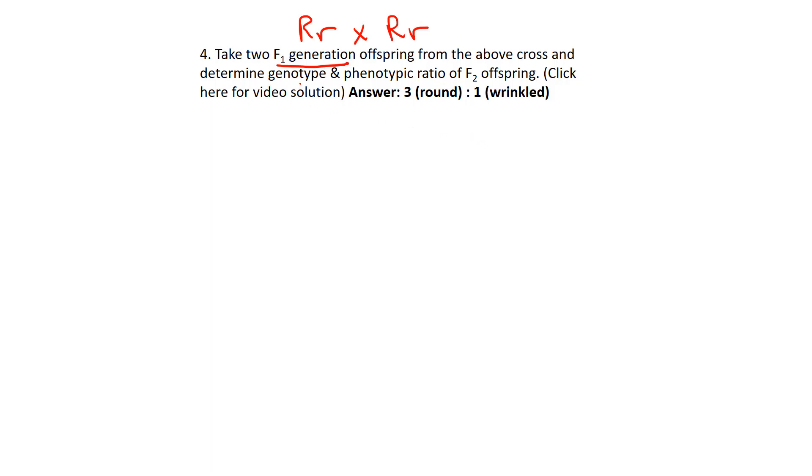And of course they want a genotype and a phenotypic ratio of the F2 generation. So we're taking two F1 guys. We're going to need to make a Punnett square with that. Of course, the legend is the same so we just bypass that. We isolate those genotypes into gametes.